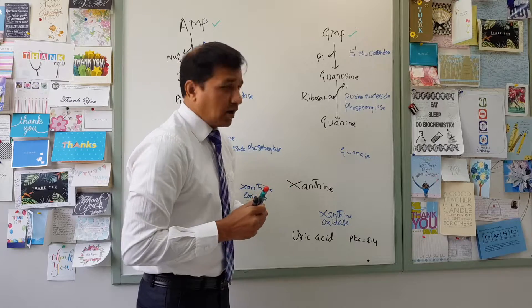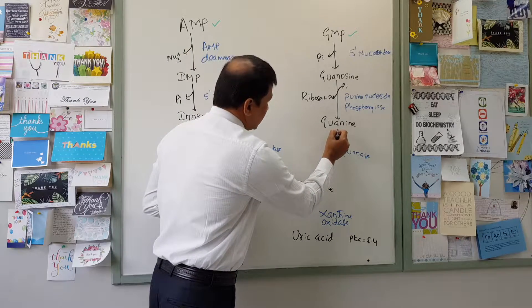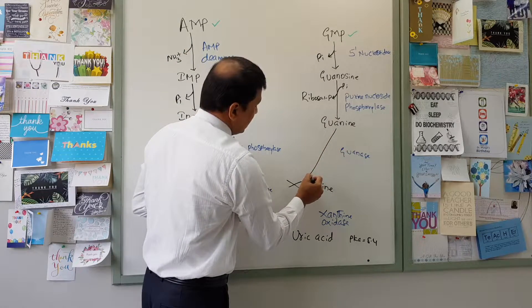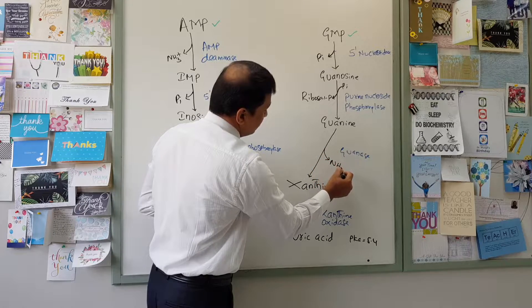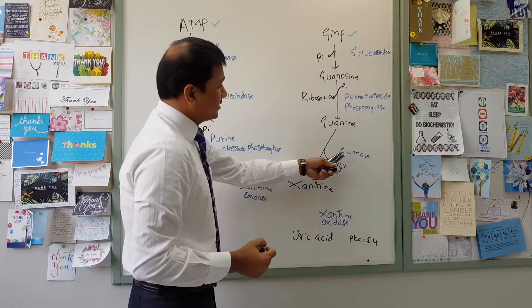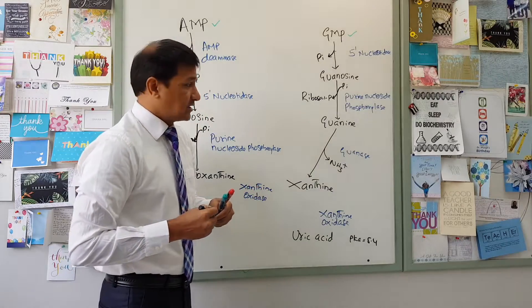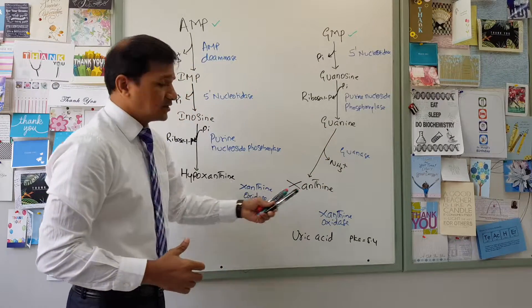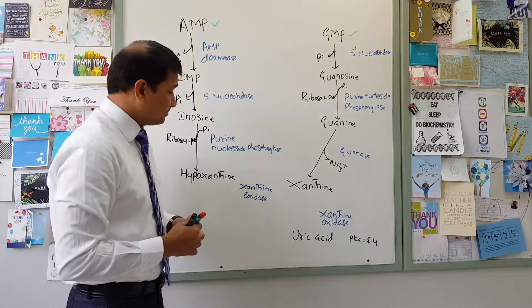Guanine is then converted into xanthine after the removal of an ammonium ion — that is one more ammonium ion released. The job is done by the guanase enzyme. So guanine is converted to xanthine, which is a free purine base.